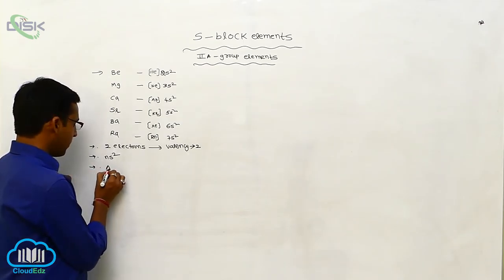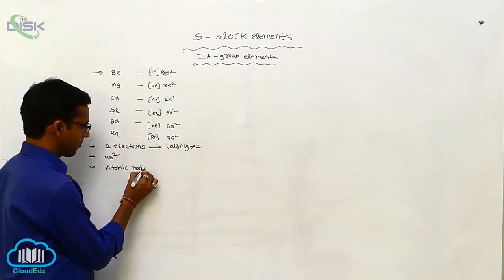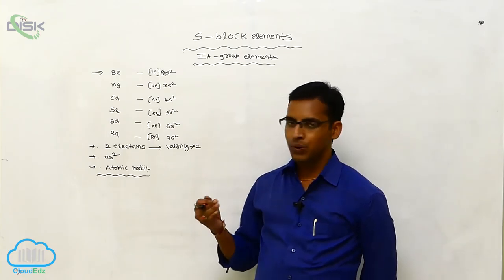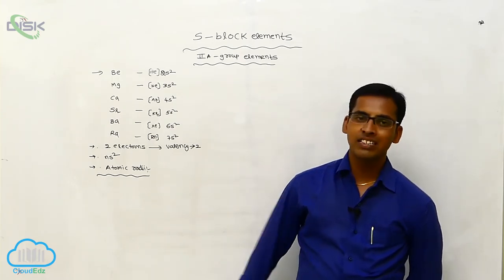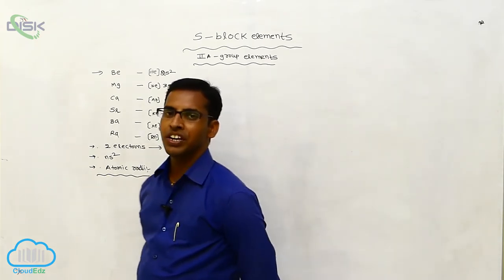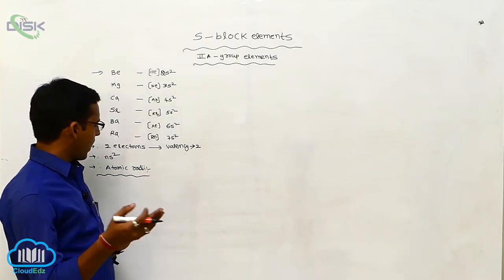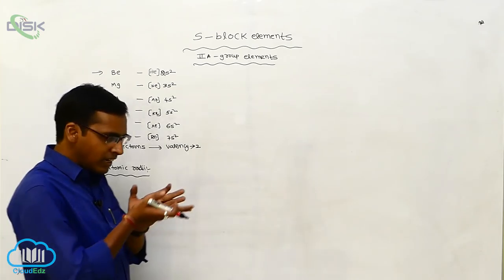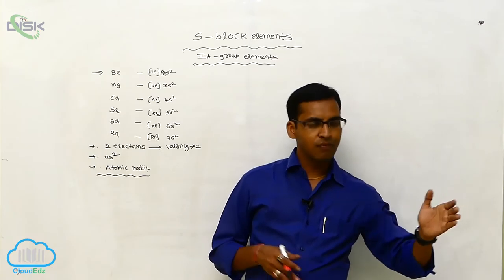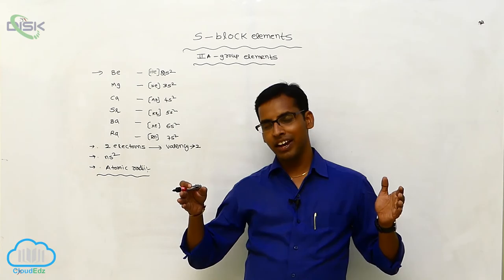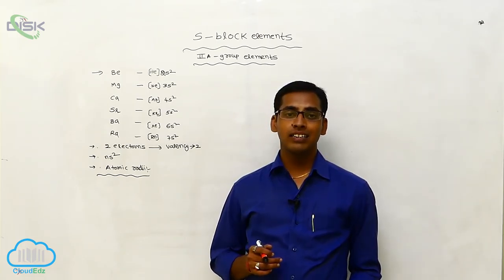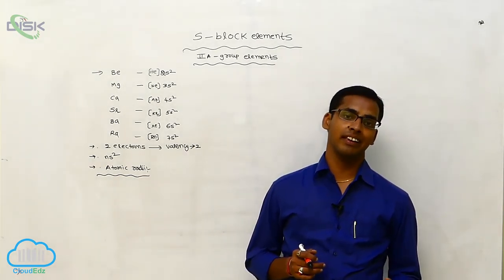The next property is atomic radii, or atomic size. Whenever the electron enters into a different shell, from top to bottom atomic size increases. In secondary group elements, atomic size increases from top to bottom because the differentiating electron enters into a different shell. Ionic radii also increases from top to bottom. However, in a period from Group 1 to Group 2, the size decreases — meaning from left to right in a period, atomic size decreases.